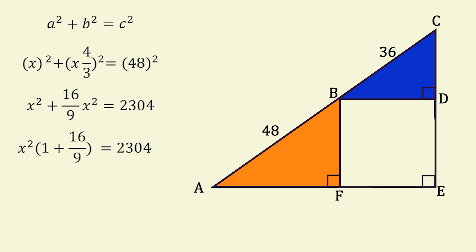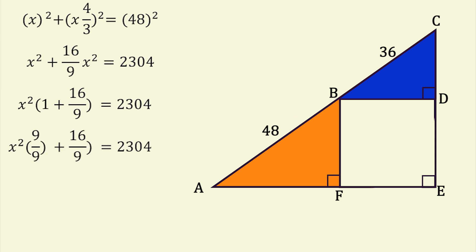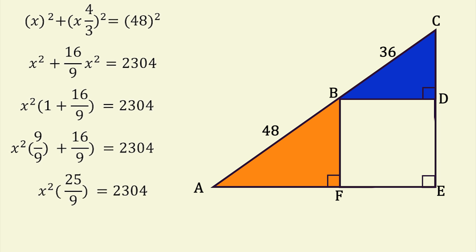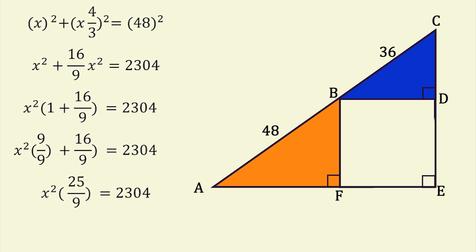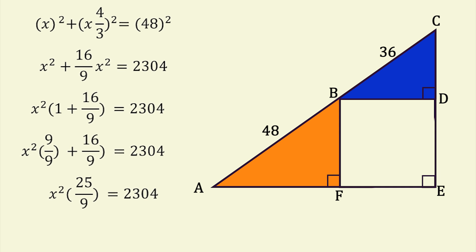To add the numbers in the parenthesis, we need a common denominator. 1 can be written as 9 over 9, so we simply add the numerators. 9 plus 16, which gives us 25. So, the equation becomes X squared times 25 over 9 equals 2304.